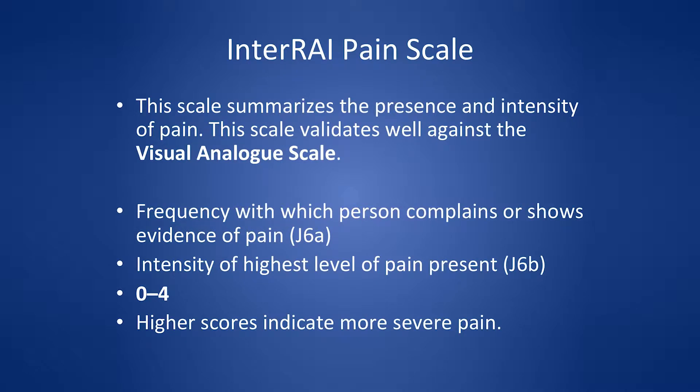What they're looking at is the frequency with which the person complains or shows evidence of pain. It is a zero to four scale, which is easy. We're used to zero to ten, so the question is can we get used to the zero to four? I agree with somebody who was saying that loses some detail, but we're already doing it — can we use it as part of that?